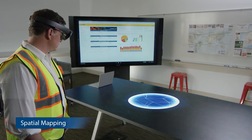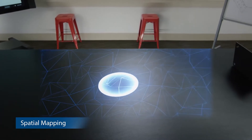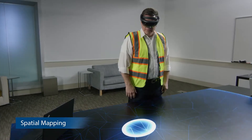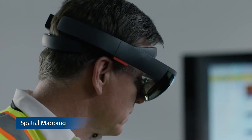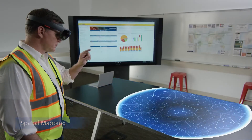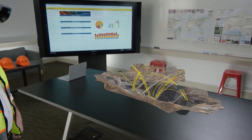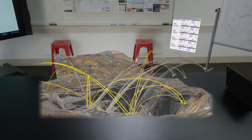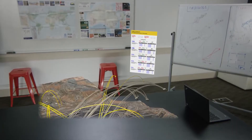Spatial mapping brings the real world and virtual world together. The HoloLens scans your environment, creating a map or mesh of your room, allowing the holograms to be placed on the surfaces it finds. You can then use this information to set the mine model on a table or pin a report to a wall, like a virtual pinboard.